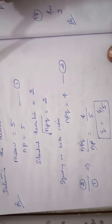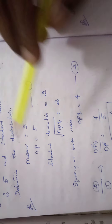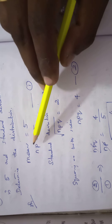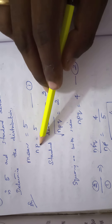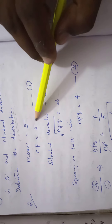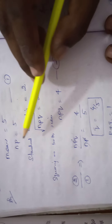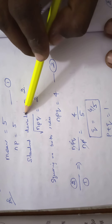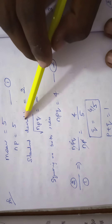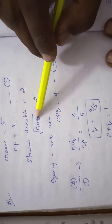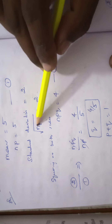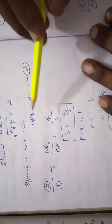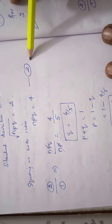The solution: mean value is 5. The mean of the binomial distribution is Np, so Np = 5. Next, the standard deviation of the binomial distribution is √(Npq) = 2. Squaring both sides, the root is cancelled, so Npq = 4. This is equation number 2.